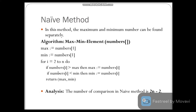The first one is the naïve method. In this method, the maximum and minimum number can be found separately. Initially, Max and Min are considered as the first element of the array. From the second element to the last element, we check if the number at that position is greater than Max — if so, Max is updated to that new number. And if the number at the next position is less than Min, then Min is updated to that number. After that, we return those numbers as Max and Min.